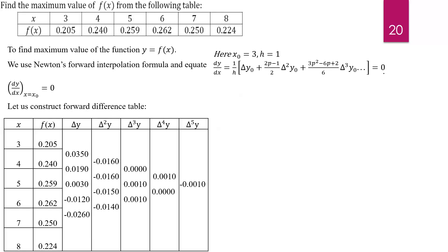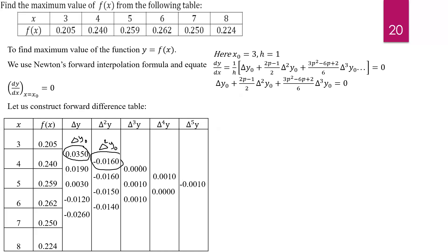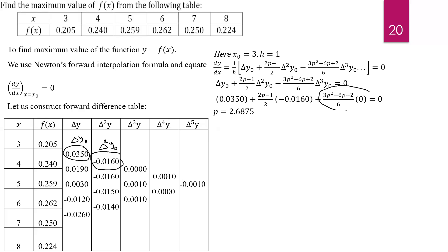We equate this to 0 for obtaining maxima and minima. Simplifying the bracket: since 1/h is never 0 (h = 1), the square bracket equals 0. Substituting the values — del y₀ (first forward difference), del² y₀ (second forward difference), and the third order difference which is 0 — we consider only the first three terms. After solving this equation for p, we get p = 2.6875.